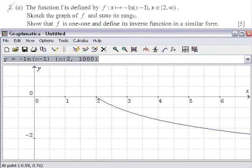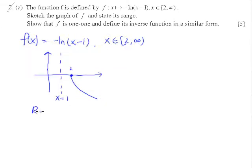Using a graphing software, you can actually see it this way, with the domain of 2 to infinity. So the range of our f should be rather obvious - it will be from negative infinity to 0, inclusive. This will answer the first part of the question - sketch and state its range.